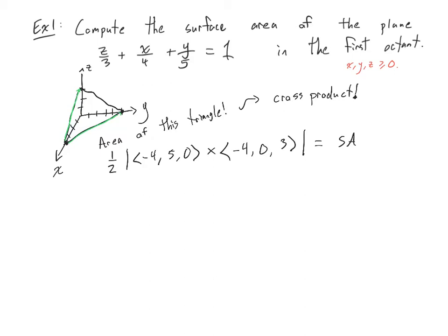So let's see, I computed this. And this should be 769, take the square root of that, square root of 769 divided by 2. That's your surface area.